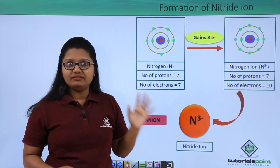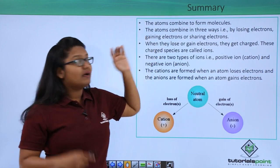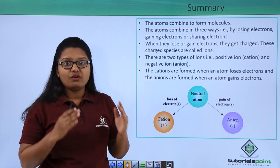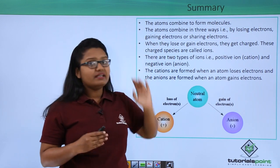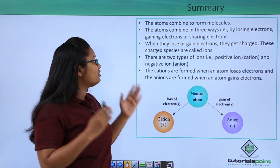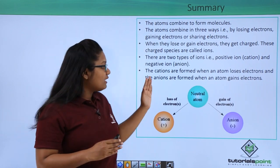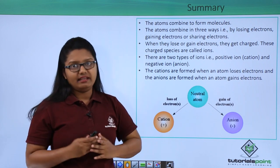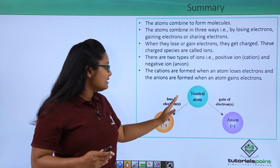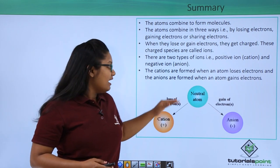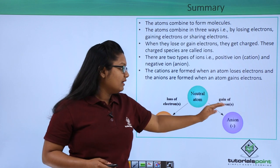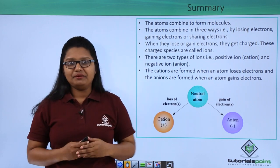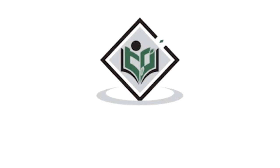To summarize: atoms combine to form molecules in three ways — by losing electrons, gaining electrons, or sharing electrons. When they gain or lose electrons they become charged, and these charged species are called ions. There are two kinds of ions: positive ions called cations, and negative ions called anions. When a neutral atom loses electrons it becomes a cation, and when it gains electrons it becomes an anion. Thank you — Tutorials Point, simply easy learning.